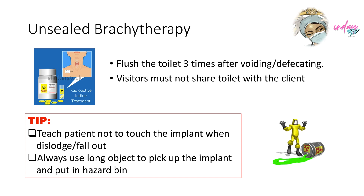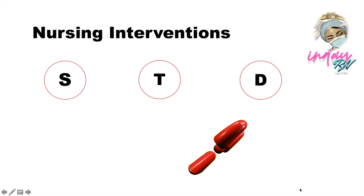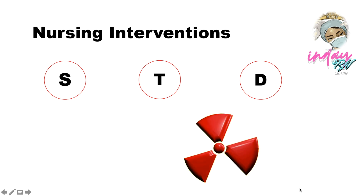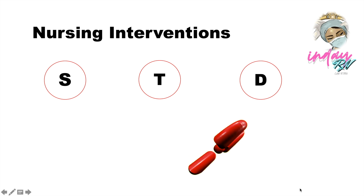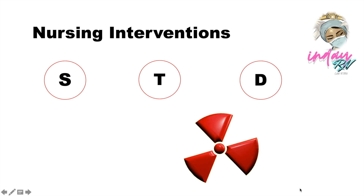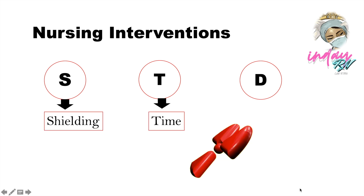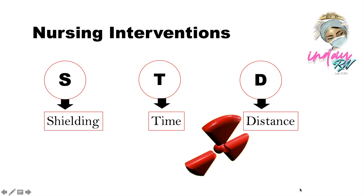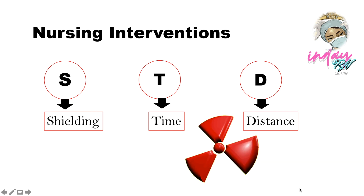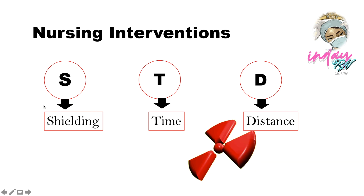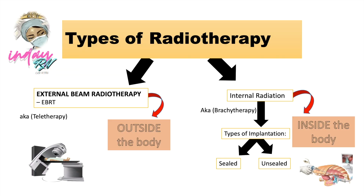Visitors must not share a toilet with the client. If an implant is dislodged or falls out, tell the patient not to touch it — use a long object instead to pick it up and place it in the hazard bin. Always prioritize your safety as a nurse and your patient's safety. Limit time, use proper shielding, and apply appropriate distance. The higher the dose of radiotherapy, the more delicate the patient's situation.